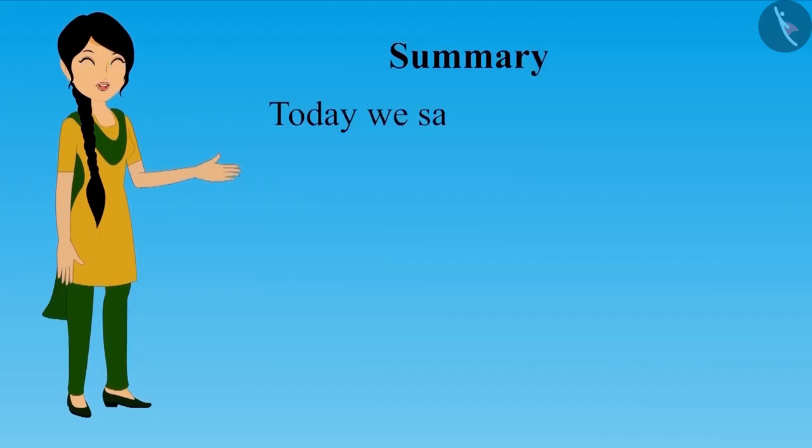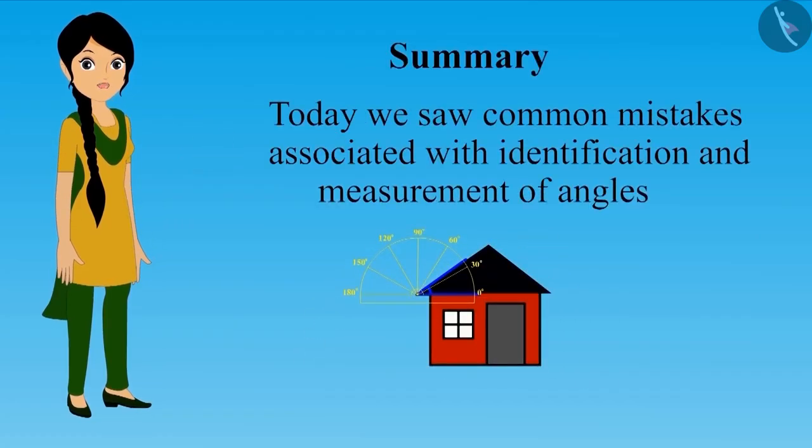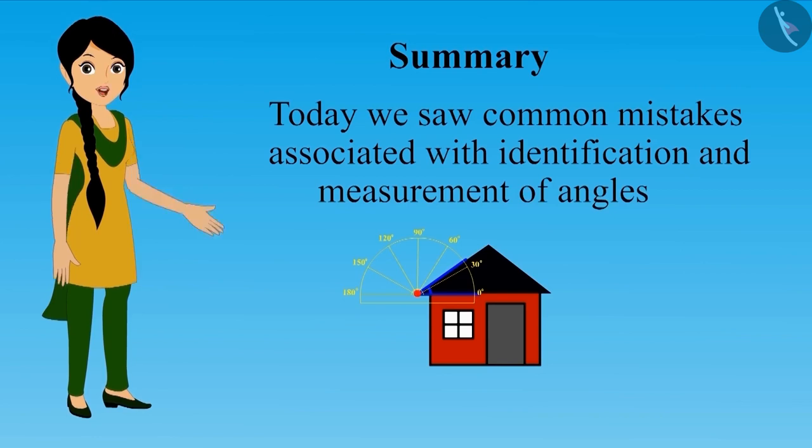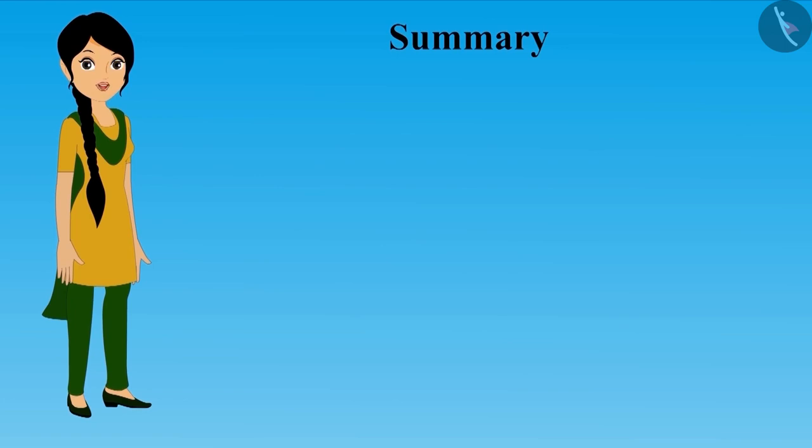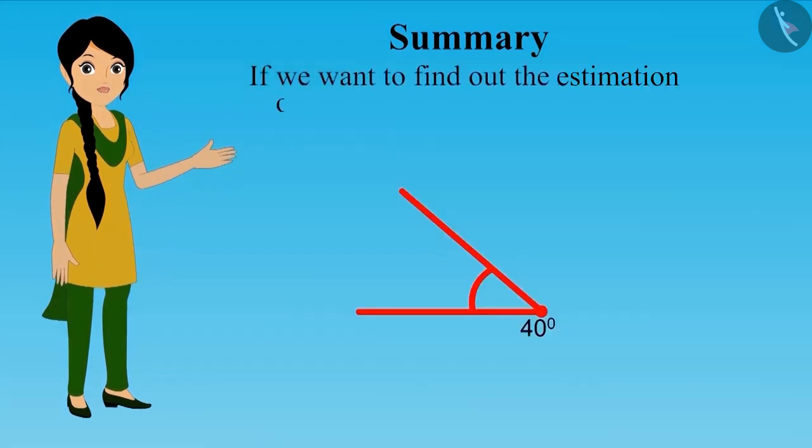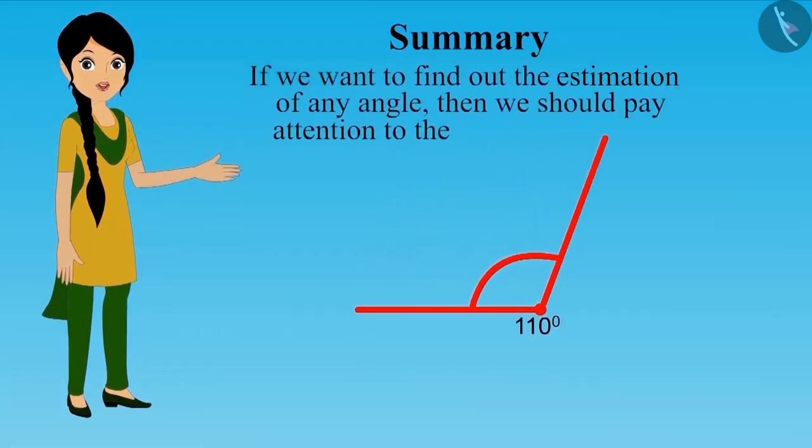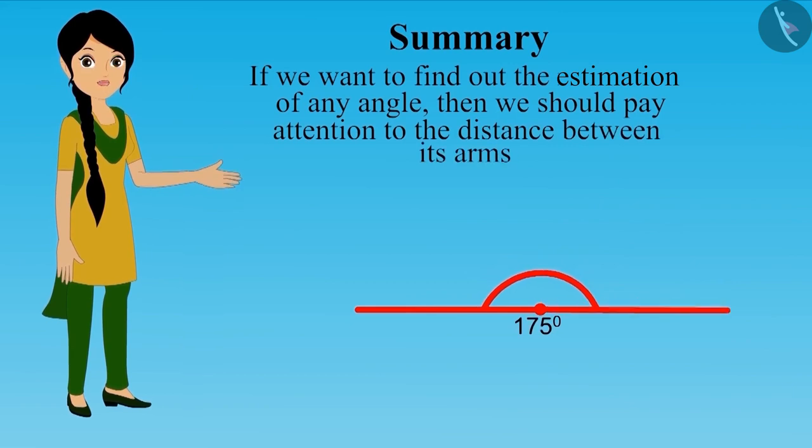In this video, we learned that in order to measure the angle, we need to align the center point of the protractor and the vertex of angle and the arm of the angle has to be aligned with the baseline of the protractor. We also learned that if we want to find out the estimation of any angle, then we should pay attention to the distance between its arms.